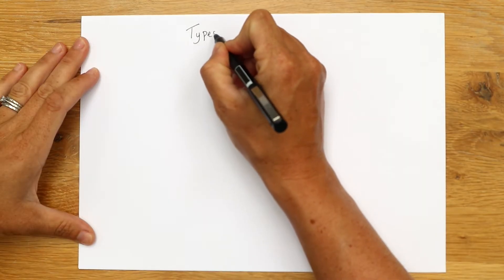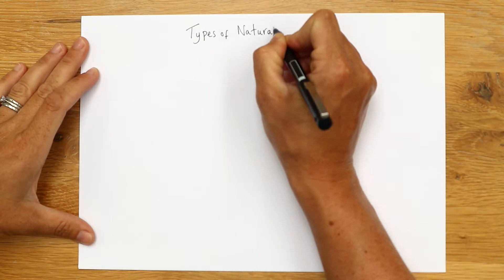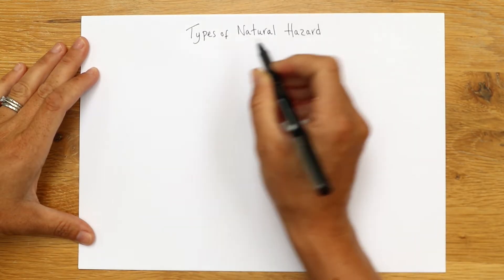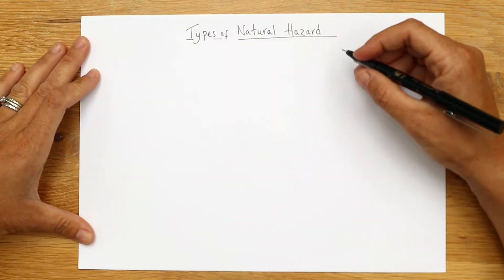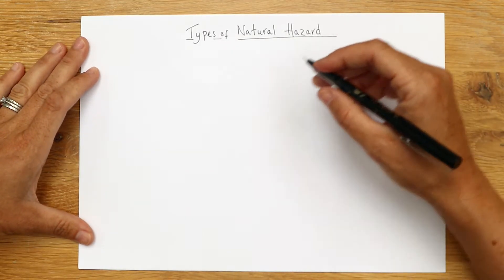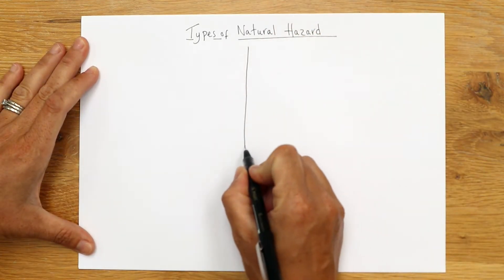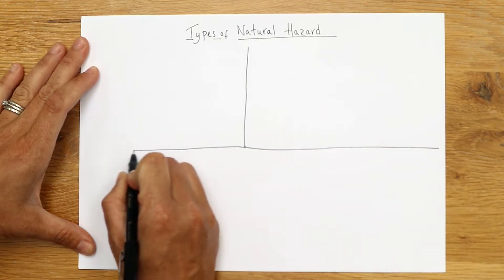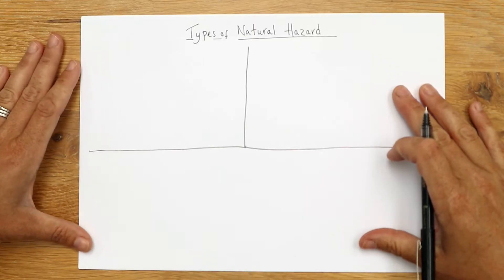So if you just pop that as your title, types of natural hazard. And then what we're going to do, because there's three main types we look at for this course, is we're going to break our page into three, but not in the normal way we do. Do it this way and that way. Don't worry if it's not perfect, but just give yourself a bit of room.